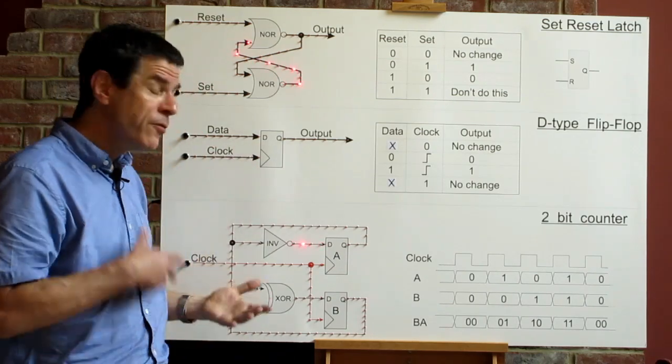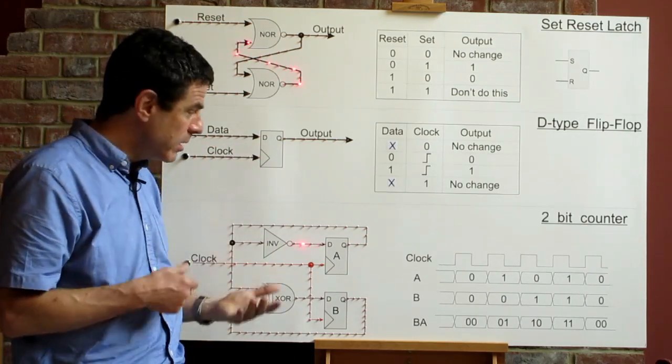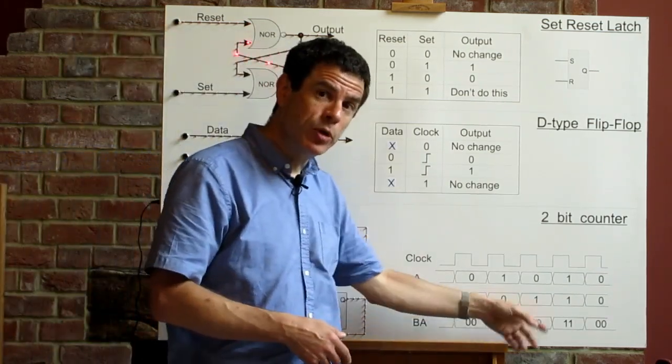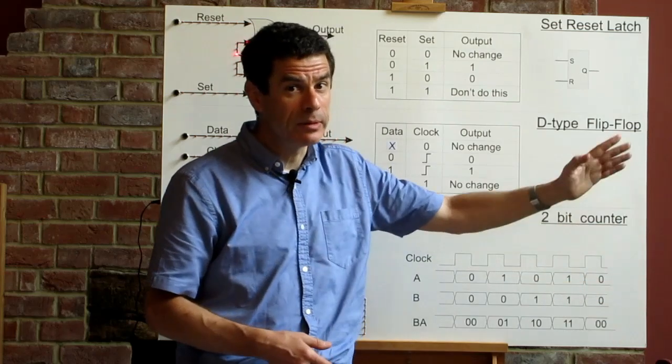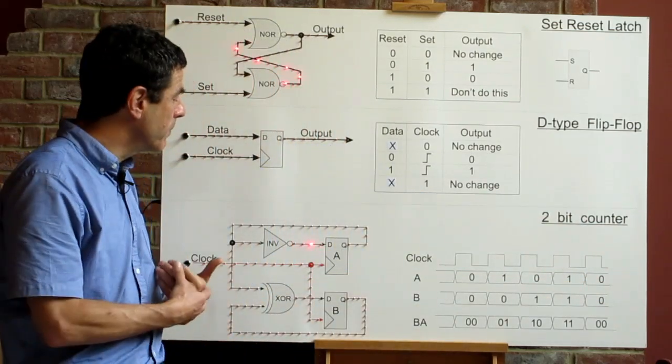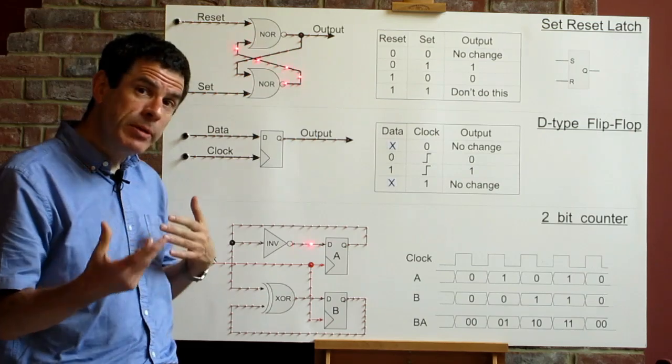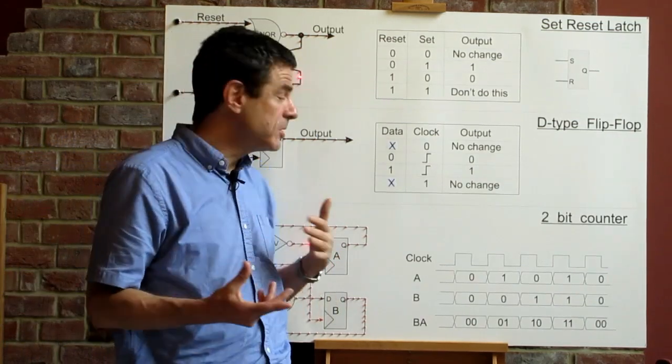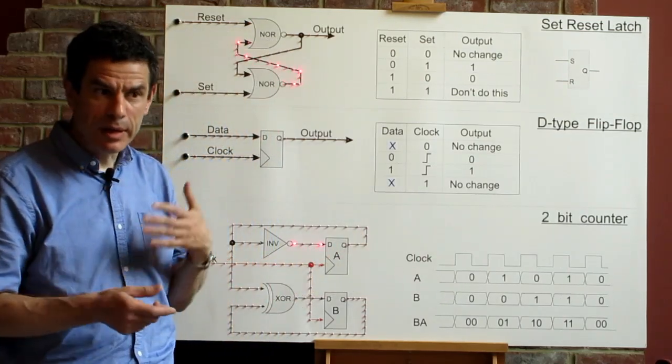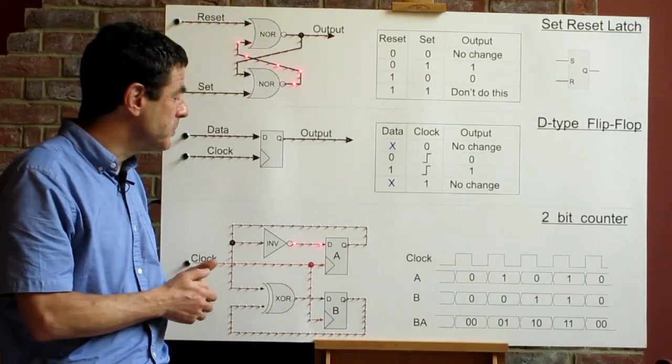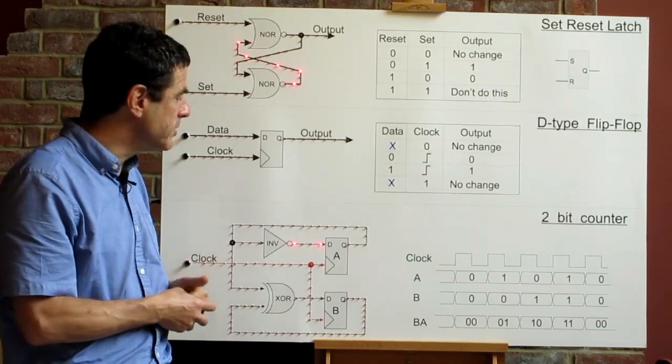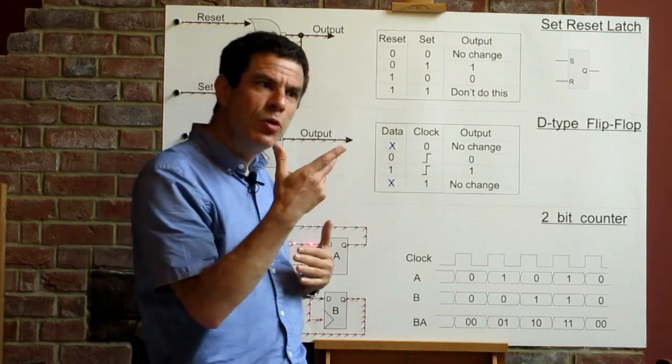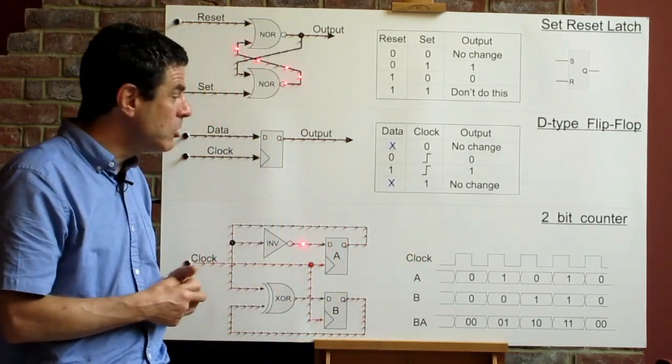As it's a two-bit counter, there is a fixed pattern of states it can move through. It starts at 0, then goes 1, 2, 3, then back to 0, and so forth. It's a counter, that's what it has to do. But it's possible to build systems which go through a much more complex sequence of states, potentially infinite variety of states, infinite sequence of states. And that's starting to get closer to the behaviour of a processor. So the next thing we're going to look at is the state machine.